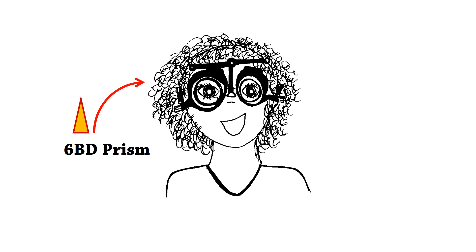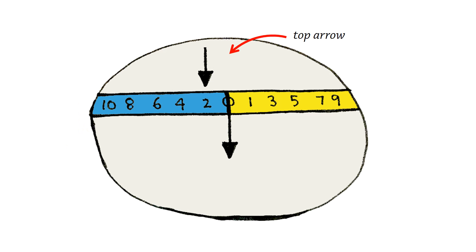So how do we test ACA? The patient needs to be wearing their full near correction when testing at near in a trial frame. Then you're going to place a six base-down prism in front of the right eye to dissociate the eyes. The patient should see two arrows, and you need to ask the patient where the top arrow is pointing — to the blue or the yellow. This provides us with our starting point and gives you the convergence before changing the accommodative demand.